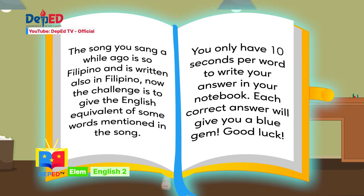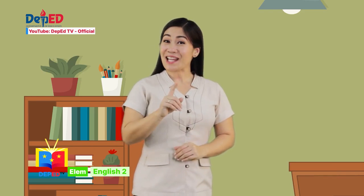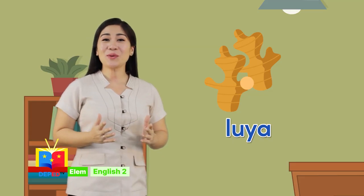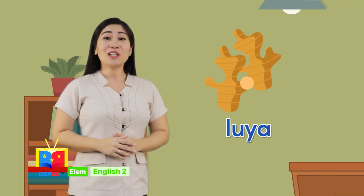The song you sang a while ago is so Filipino and it is also written in Filipino. Now the challenge is to give the English equivalent of some words mentioned in the song. You only have 10 seconds per word to write your answer in your notebook. Each correct answer will give you a blue gem. Good luck! Here is our first word — get ready: luya. This is a root vegetable and is used as an alternative herbal medicine. What is the equivalent word of luya in English?